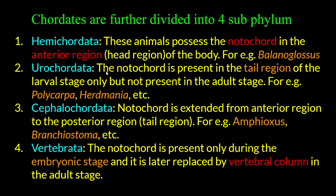In Urochordata, the notochord is present only in the larval stage; in the adult stage, the notochord is absent. An example of Urochordata is Herdmania (also called Polycarp).